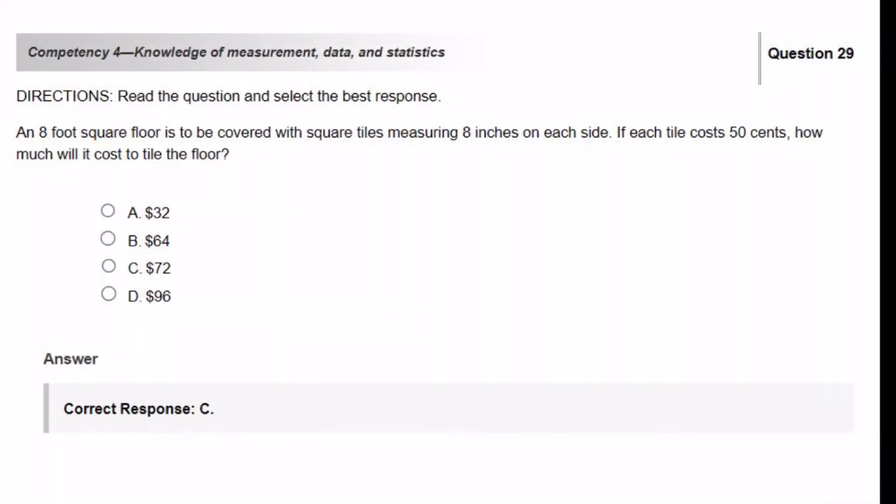An 8-foot square floor is to be covered with square tiles measuring 8 inches on each side. So if each tile costs 50 cents, how much will it cost to tile the floor? So I like to start my work problems off with pictures just to see if I get a good understanding. So we have here a floor, and it's in the shape of a square. And they say that each side is 8 foot. Well first off, they say it's 8 foot. What you have to know is that all of the sides of a square have the same length. So I'm going to write 8 foot, 8 feet on each side.